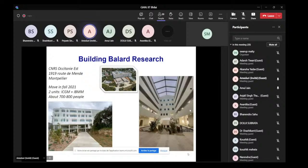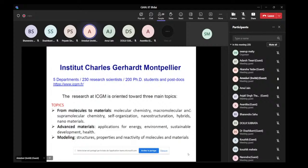One institute is called Institute Charles-Guerrard in Montpellier, which is composed of five departments, 250 research scientists, 200 PhD students, and postdocs.